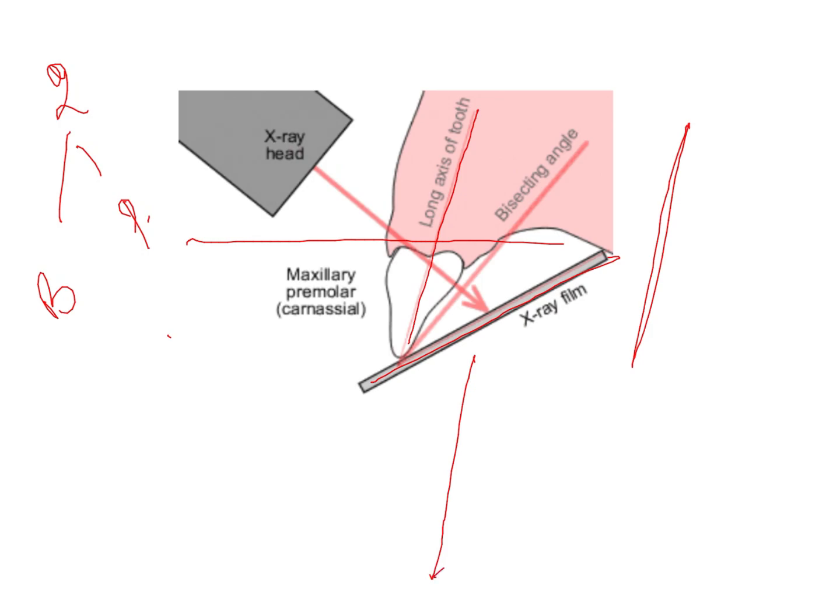The X-rays are perpendicular to a line that divides this triangle into two equally symmetrical triangles. This is called the rule of isometry, which is the basis of the bisecting angle technique.